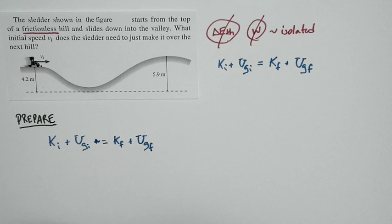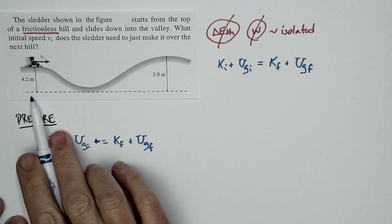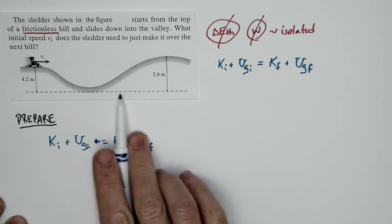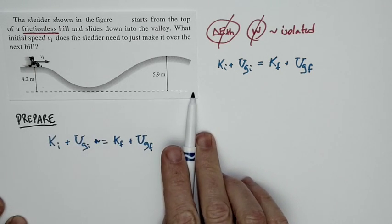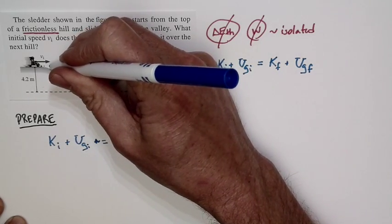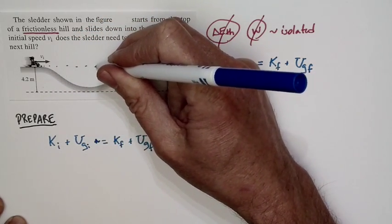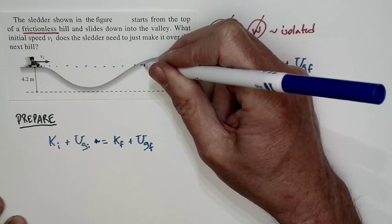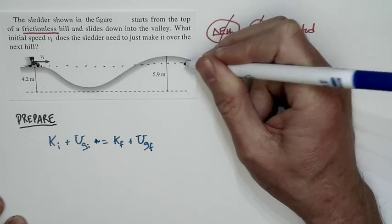One of the basic things we have to figure out in setting up a problem like this is what to take as the zero for potential energy. You're given a zero line right here. We could use this. But, in fact, we don't have to. I'm going to take the zero line to be right here. I'm going to take it to be the starting point of this sledder.